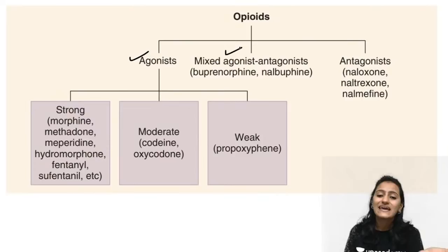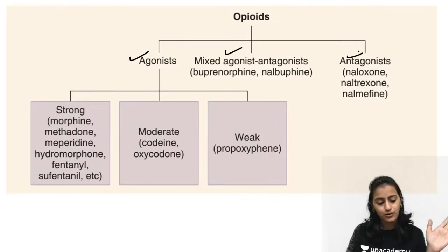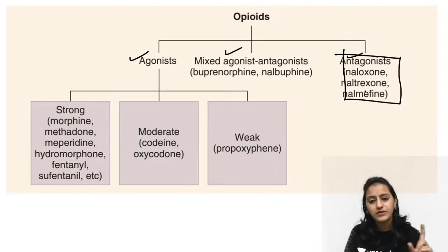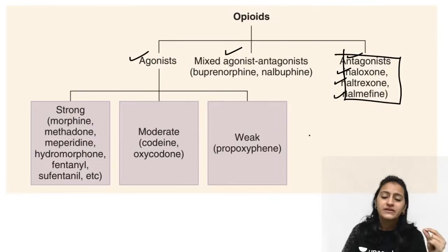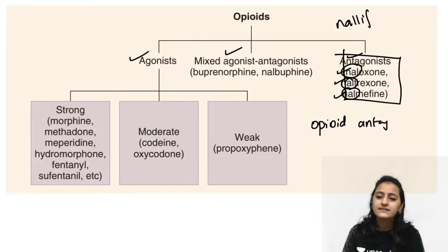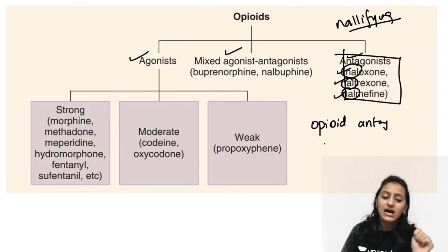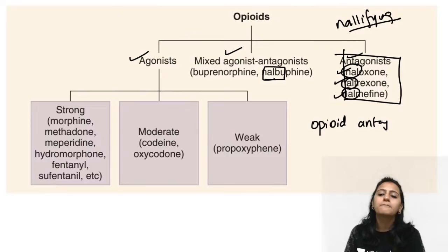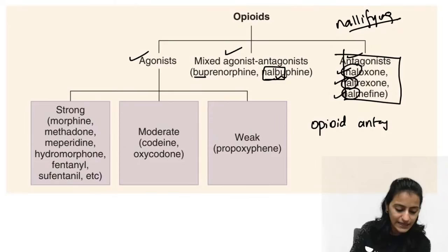Coming to the classification of opioids by agonist/antagonist activity. Pure antagonists: naloxone, naltrexone, and nalmefine — all 'nal' drugs, meaning they nullify opioid action. The nal-drug that is NOT a pure antagonist is nalbuphine, because it has 'BU' in it like buprenorphine — it is both agonist and antagonist (mixed).